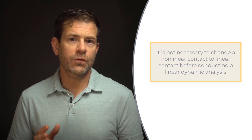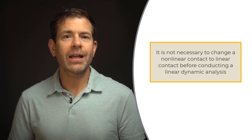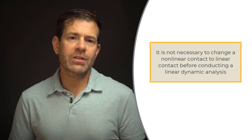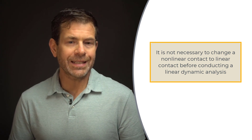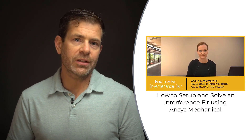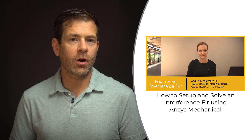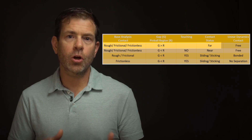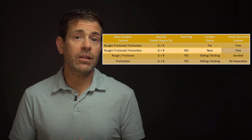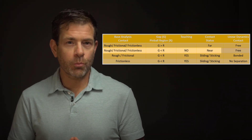If a nonlinear contact such as frictionless or frictional is present, then we do not need to change it to a linear contact before conducting a linear dynamic analysis, as long as we understand how these nonlinear contact behaviors are treated in the modal analysis. The pinball region of the contact plays a role in how the contact is treated. If the distance between the contact and target is larger than the pinball region, then the contact status will report far. If it is less than the pinball region but not touching, the status will report near.